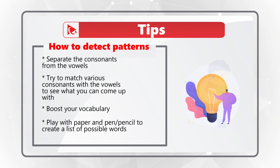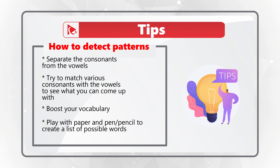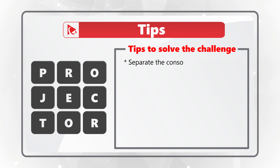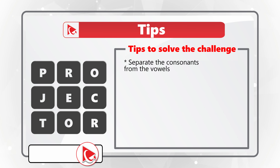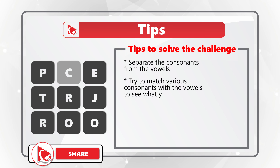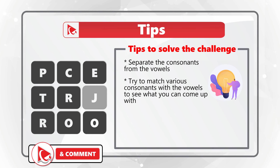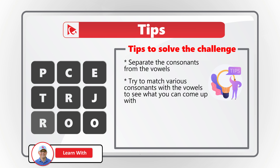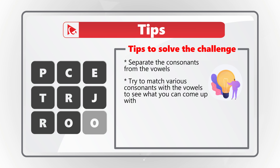Here are some tips to help you solve these types of challenges in the future. One idea is to separate the consonants from the vowels. For example, the consonants here are P, C, R, T, J, R, and the vowels are E, O, and O.